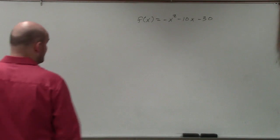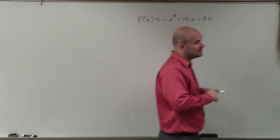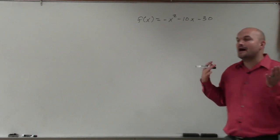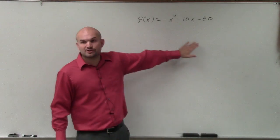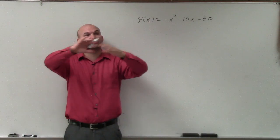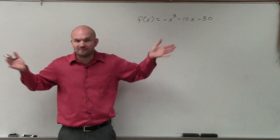So in this example, we have f of x equals negative x squared minus 10x minus 30. Now, obviously, what I told you in the last class period, to go ahead and graph this, what we could do is go ahead and complete the square. And if you guys remember, we did that process, the four or five steps.